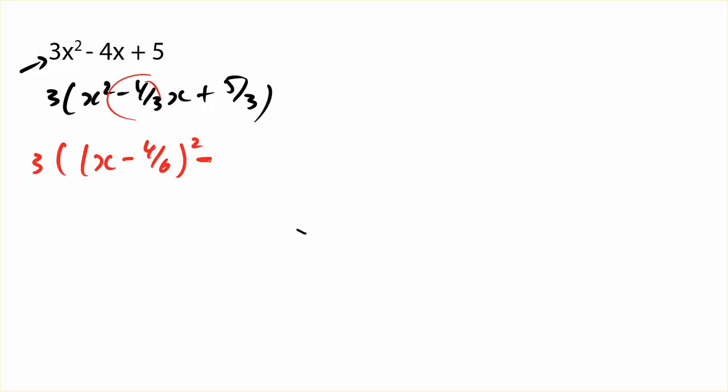subtract, so there's always a minus sign, the square of this. So negative 4 on 6 squared is the same as 16 on 36. And I drop this down the bottom. So when I drop it, I get 5 over 3.